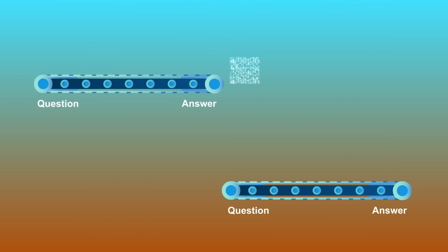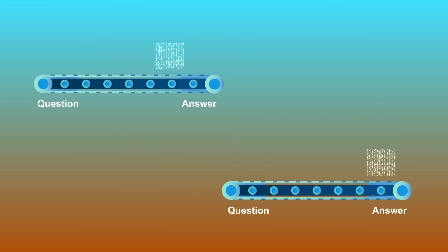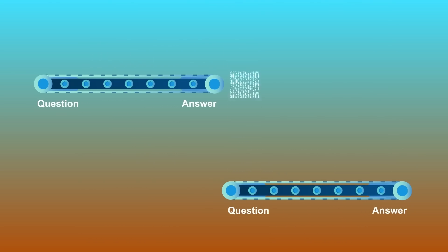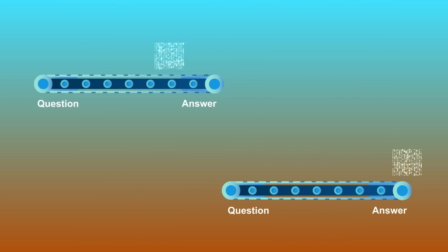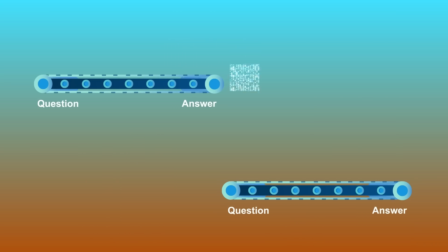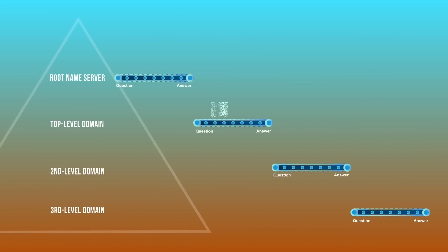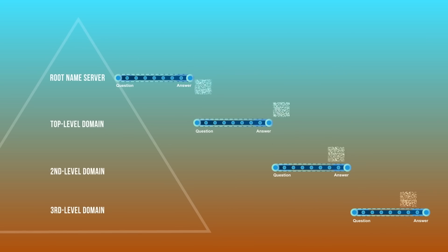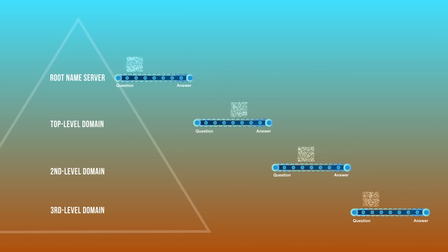The word recursive means that you're repeating a process, and each time it's repeated, you use the output of the previous stage as the input on the next stage. As you walk the tree, you ask who's responsible for something, and the answer you get back is a set of name servers for that particular cut. You'll use those name servers to find the location information for the next level down.